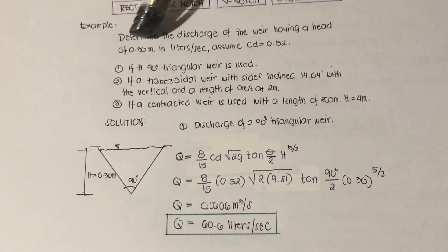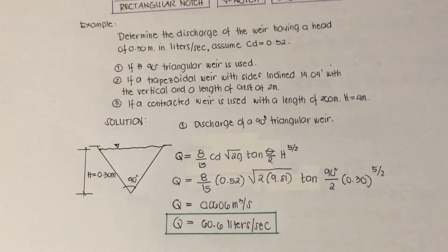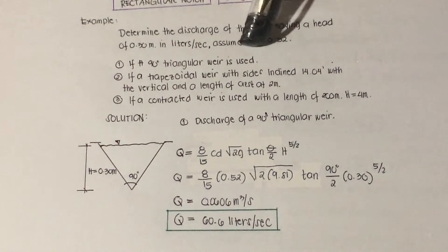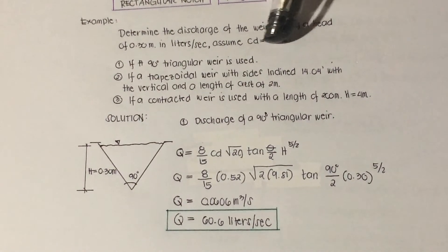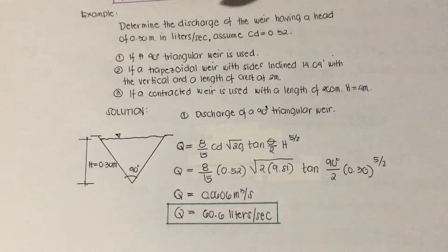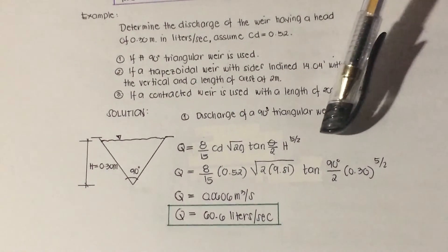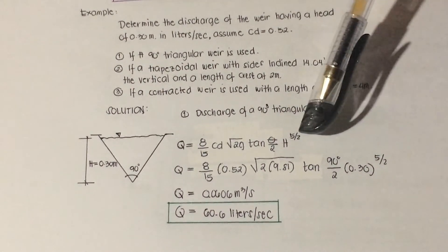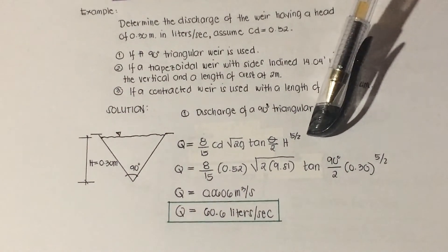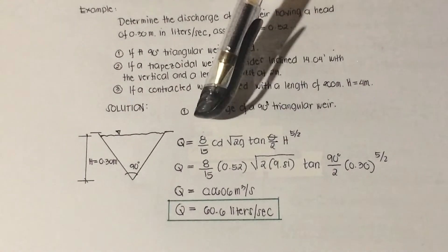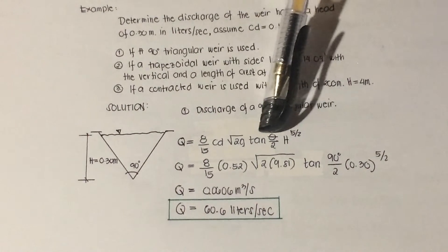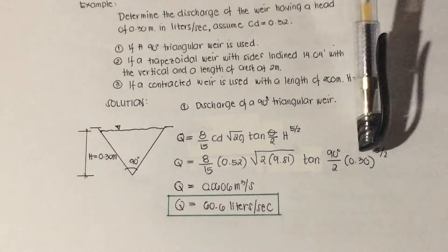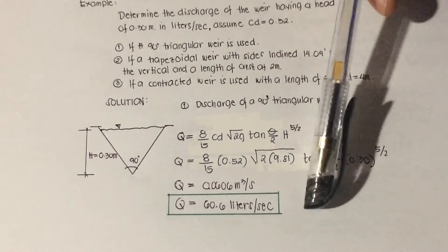For number one, we have a 90-degree triangular weir with a head of 0.30 meters and a coefficient of discharge of 0.52. Since velocity approach is neglected, we use the triangular weir discharge formula. Substituting the values of Cd, g, theta, and h, then calculating and converting to liters per second, the final answer is 60.6 liters per second.